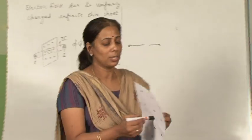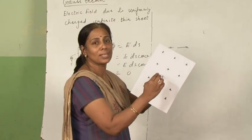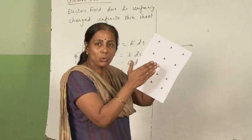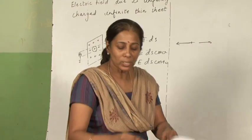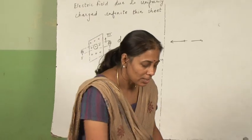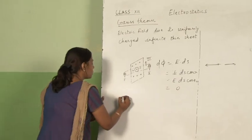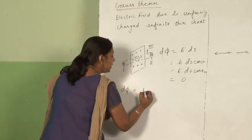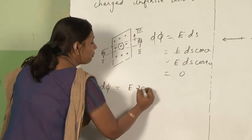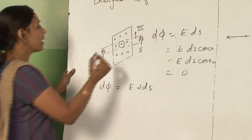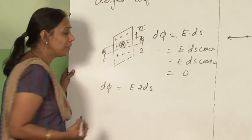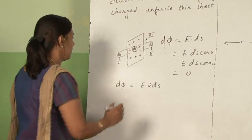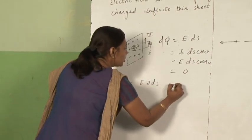Now let us see what will be in the first and second regions. The flux is crossing these two surfaces. The electric flux will be equal to E times 2dS — I am writing 2 because on both sides you have a face. So the electric flux is E·2dS. This is equation 1.